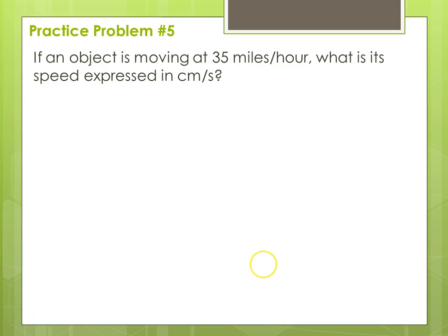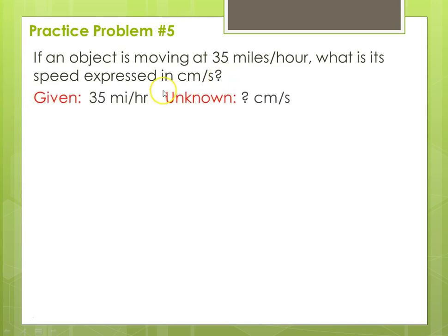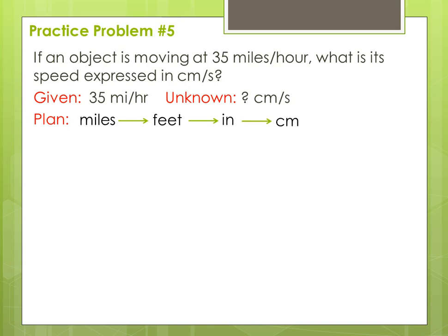One more problem — practice problem five. If an object is moving at 35 miles per hour, what is the speed expressed in centimeters per second? Notice we're using a complex unit here: miles per hour to centimeters per second. We'll need to get from miles to centimeters and from hours to seconds — it's a bit more complex. The given is 35 miles per hour; the unknown is centimeters per second. Our plan: go from miles to feet, feet to inches, inches to centimeters, and then hours to seconds. It doesn't matter if you go from hours to seconds first or last, as long as you eventually make that conversion.